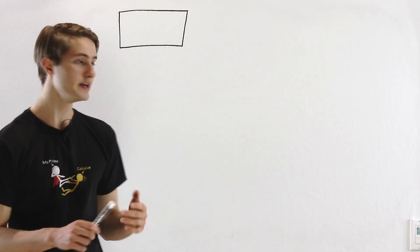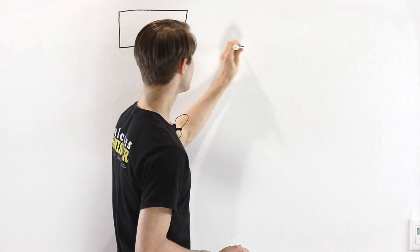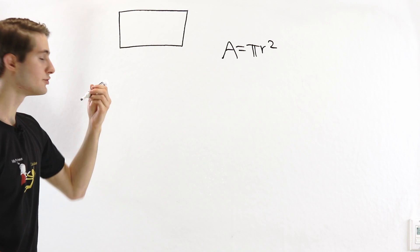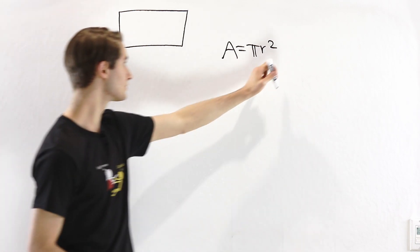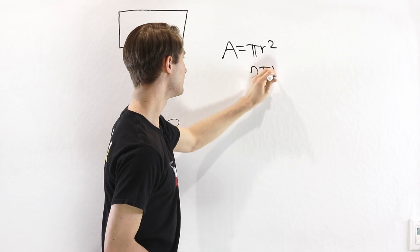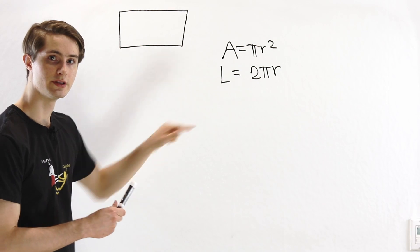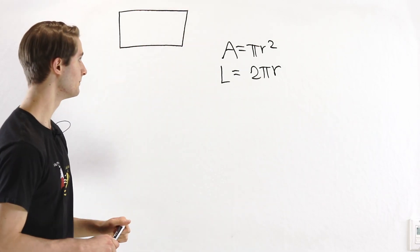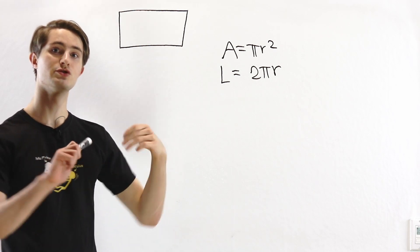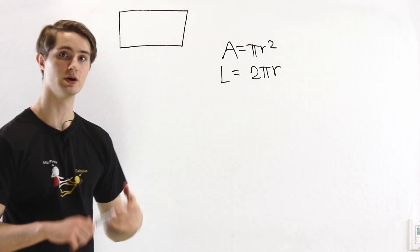You might have noticed that if we look at a circle, the area of the circle is equal to pi r squared. And if we take the derivative of the area with respect to the radius, we get 2 pi r. But 2 pi r is also the circumference of the circle, the length all the way around. So in the case of a circle, the derivative of area is equal to the circumference or perimeter.